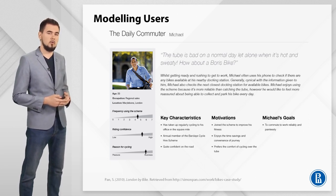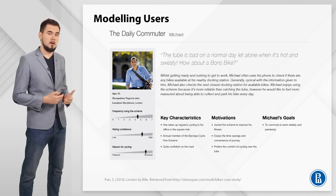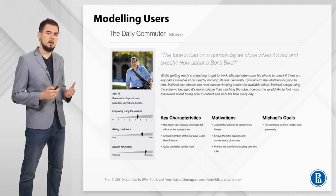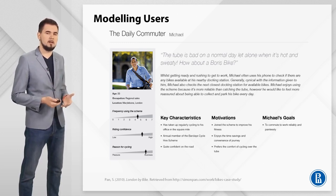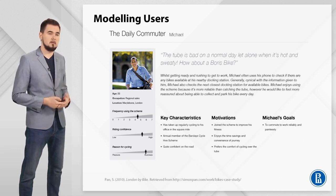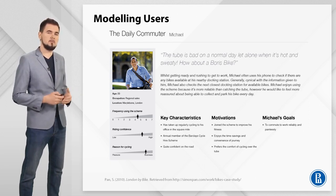Each persona has its own name and even a photo. This is done in order to invoke empathy of all team members involved in the design process. Later on in the process, personas are used for generating new product ideas, prioritizing features, selecting product metrics, designing interactions, evaluating usability, and so on. It's much easier to carry out all these tasks when imagining specific people.